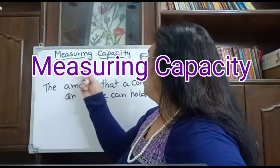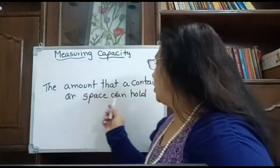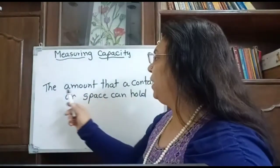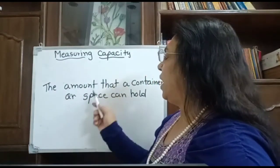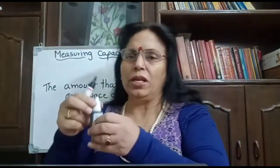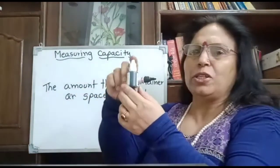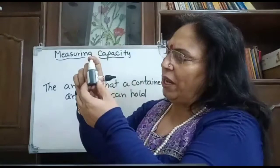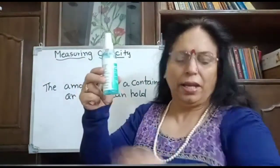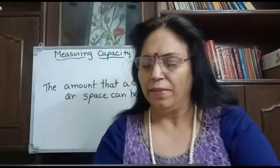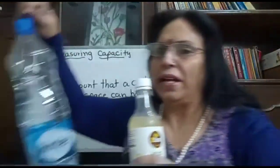Next we have measuring capacity. What is capacity? The amount that a container or space can hold — the amount that a container or space can hold. That is called its capacity. Here we can see liquid: this is liquid ink, very small in amount. Then here, more than that, more than that, and then even more than that.